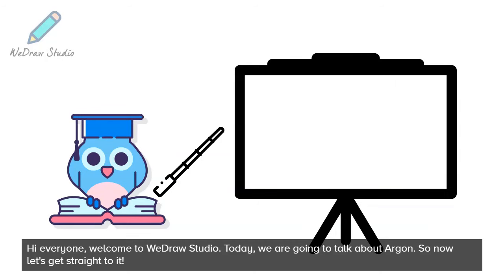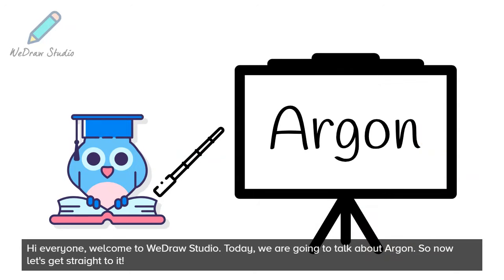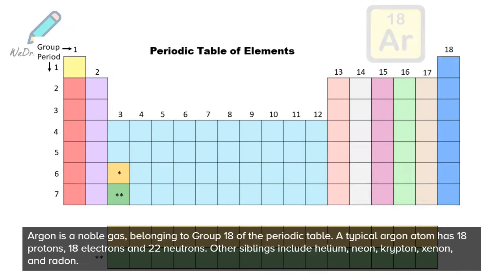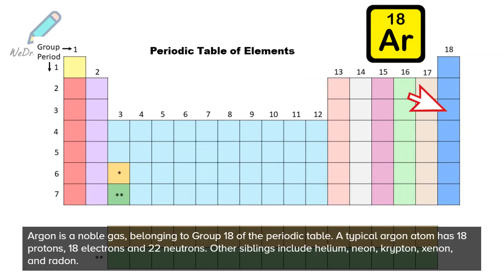Hi everyone, welcome to WeDrawStudio. Today we are going to talk about argon. Argon is a noble gas belonging to group 18 of the periodic table. A typical argon atom has 18 protons, 18 electrons, and 22 neutrons.